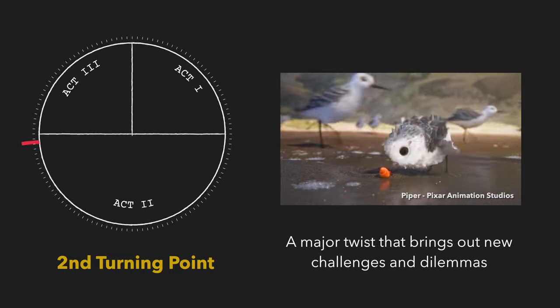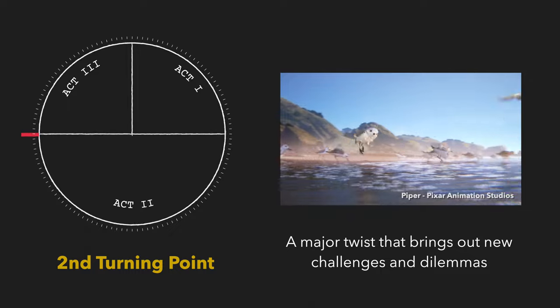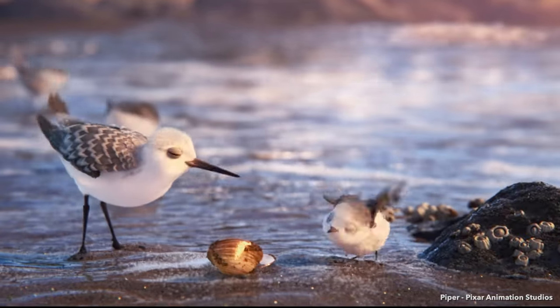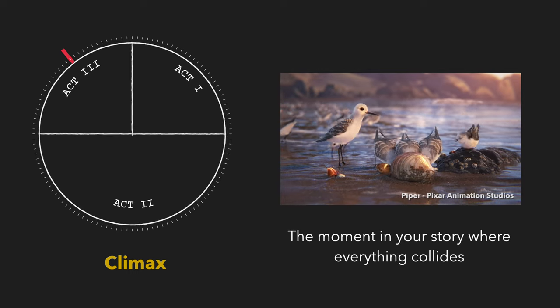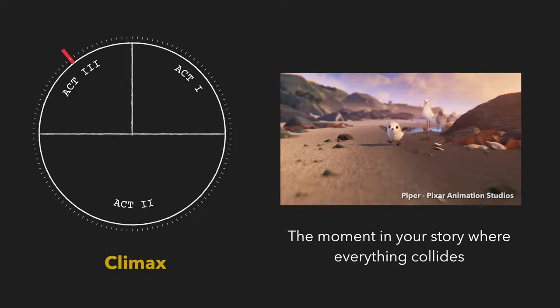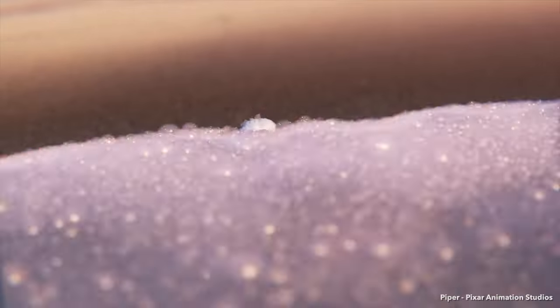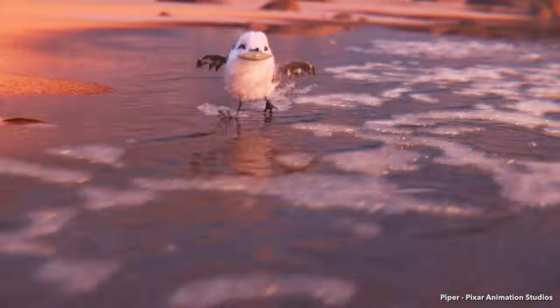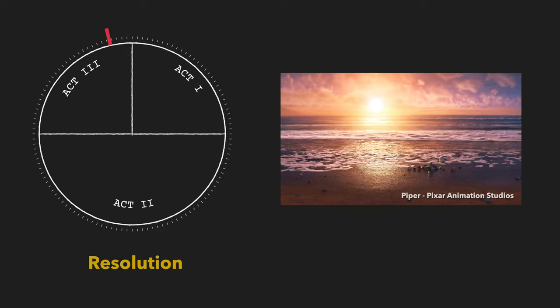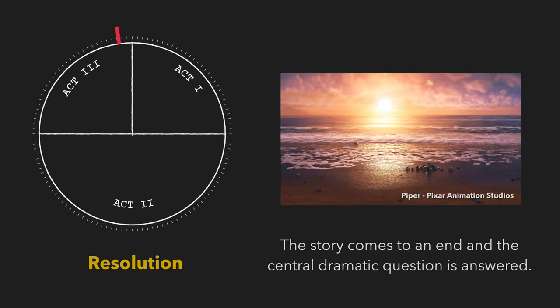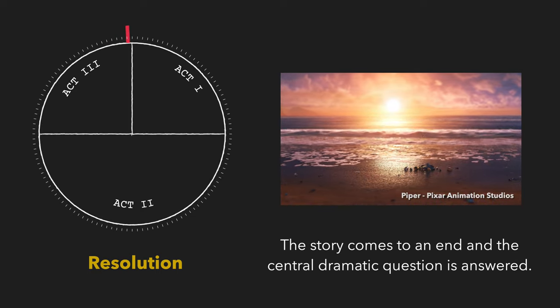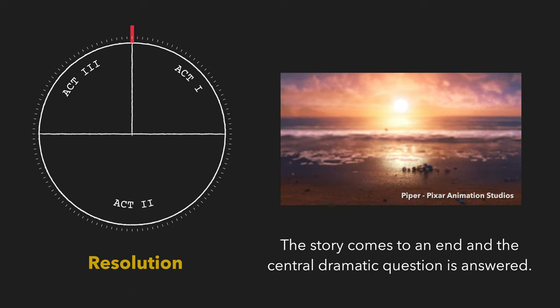The second turning point is a major twist that brings out new challenges or dilemmas. In the climax — the moment where everything collides — Piper is running on the beach when a wave hits. But this time, she's not scared anymore. She has realized that the water is not her enemy and fully embraced the truth. Finally comes the resolution, where the story comes to an end and the central dramatic question is answered: Yes, Piper was able to find food on her own without fearing the water.